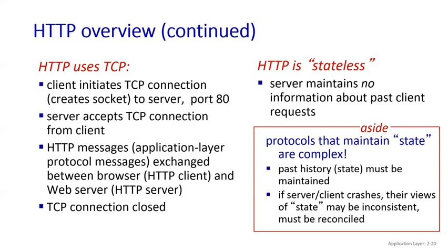TCP builds the connection between the client and server. One socket will be on the HTTP client side and one more socket will be on the server side — both sockets have to get connected before sending any HTTP request. The client initiates the TCP connection, creating the socket to the server at port 80, which is the default port. Then the server accepts the TCP connection from the client before any HTTP request or response.